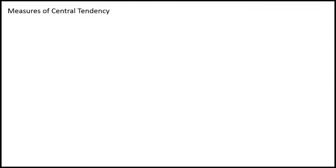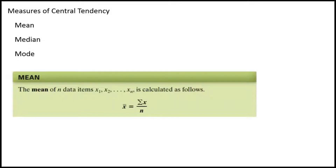In this section, we would like to talk about measures of central tendency. We have three ways to measure central tendency, or to measure the middle of the data. One of those ways is the mean, another is the median, and finally the mode. We'll talk about all three of these methods in this section, but first I want to give you the definition of mean.